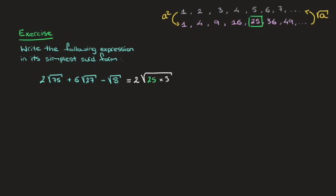Moving on to the next term in this expression, we have 6 root 27, or 6 times the square root of 27. I'll write the 6 here, and we now look for the largest square factor of 27.